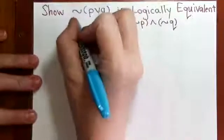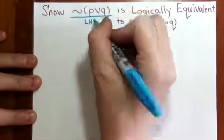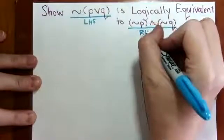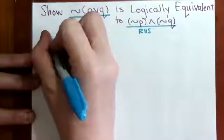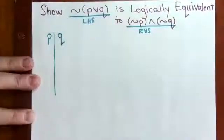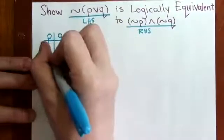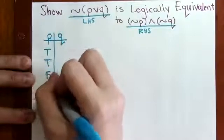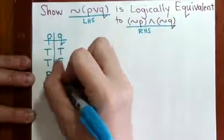So we'll call this the left-hand side and this the right-hand side. We'll make a truth table for the left-hand side. We have the P statement and the Q statement. P by convention is T T F F and Q is T F T F.